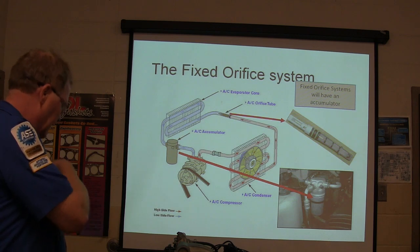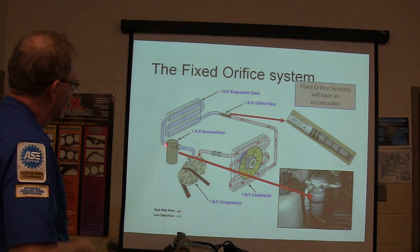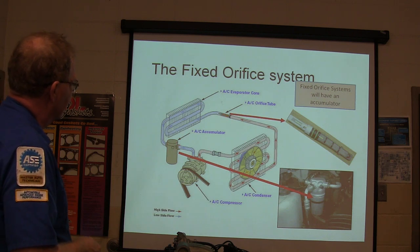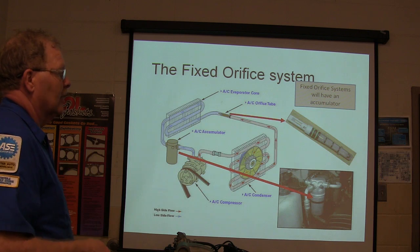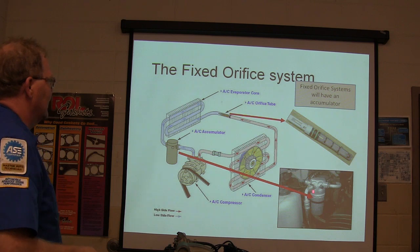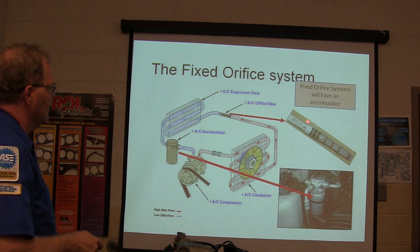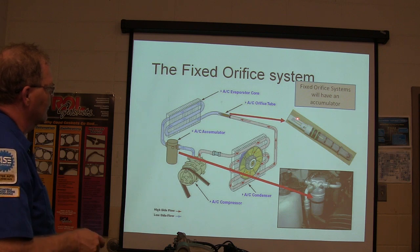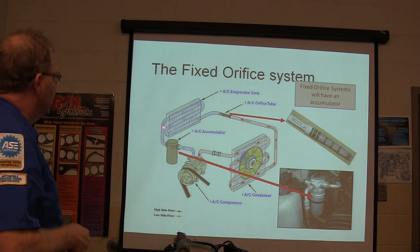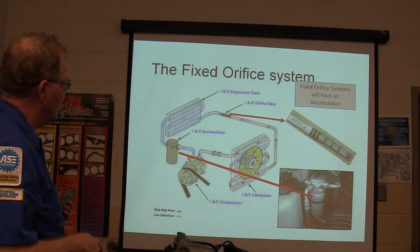Fixed orifice system — we talked a bit about this before. If you've got an accumulator, you'll typically have a fixed orifice tube. The accumulator looks like this and typically the charge port will be on the accumulator. That's what the orifice tube looks like. We've already seen that and we've got a worksheet on it. There's your evaporator, where it changes state from a liquid to a gas.